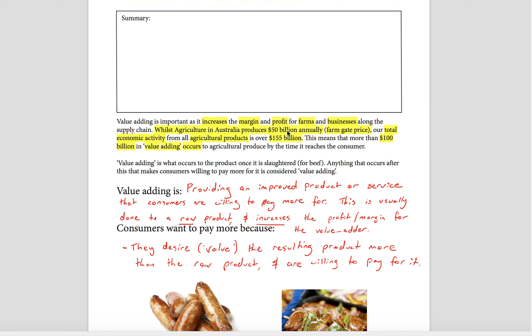Basically, in Australia we produce 50 billion dollars of raw products from farms each year, and that's the money that farmers get paid. But the total economic activity from all agricultural products by the time they're consumed by consumers is over 155 billion dollars. So you can see there that over a hundred billion dollars is being added in value-adding.